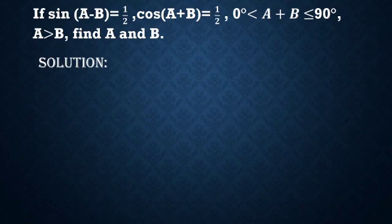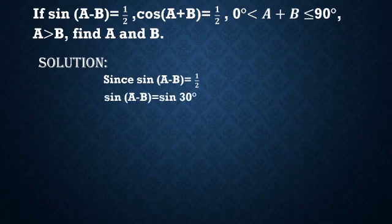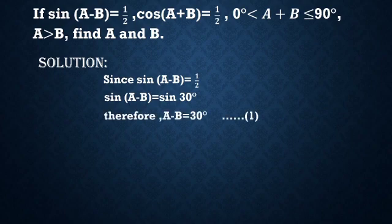Solution: Since sin(A-B) = 1/2, but in trigonometric sin ratios, 1/2 is sin 30°. So sin(A-B) = sin 30°. Therefore, A-B = 30°. This is the first equation.